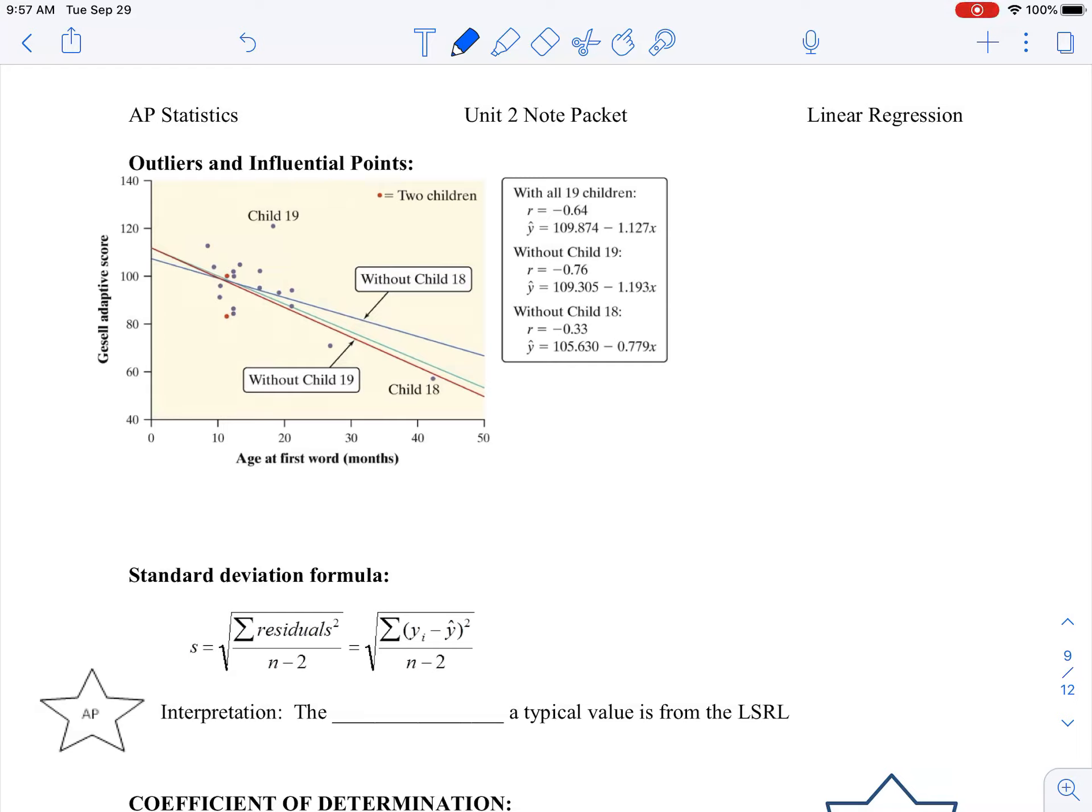All right, so we need to knock out the next section of notes here. A little bit of a smorgasbord of things that we're going to get in this one. We have outliers and influential points, understand the difference between those two. And then we have some other things as far as standard deviation, r-squared, etc. So first of all, let's talk about what an influential point is.